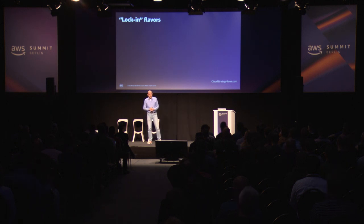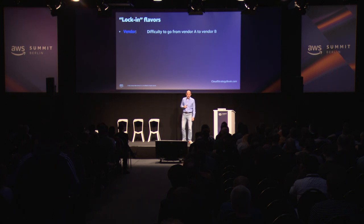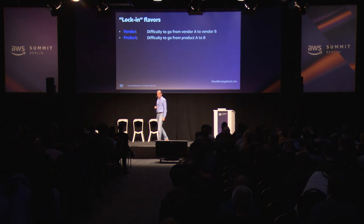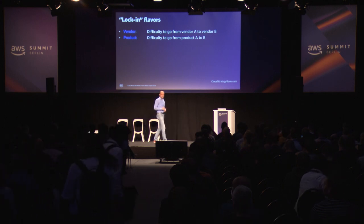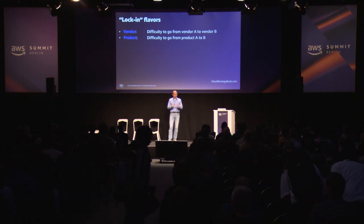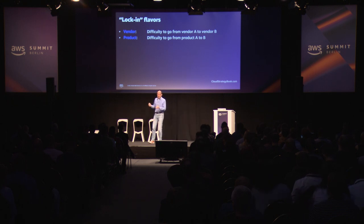Vendor lock-in comes in different flavors — I have to thank Gregor here for his book Cloud Strategy, great book, go buy it. The first flavor is vendor lock-in, the most classic form: the difficulty to go from one vendor to another for any particular solution — could be mobile phones, email systems, or cloud providers. There's also product lock-in, which means difficulty going from one product to another. Those products might be from the same vendor, or even vendor-less like open source. If you try to migrate from one open source database system to a different one, that's where product lock-in comes into play.